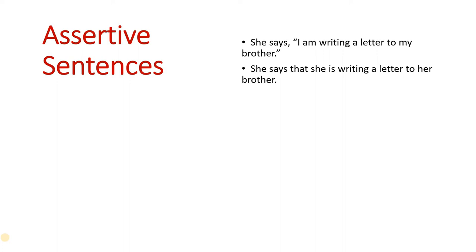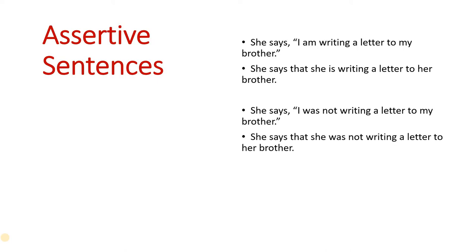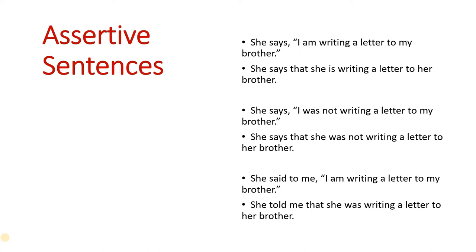See the statement and how the transformation has taken place. She says, 'I am writing a letter to my brother.' She says that she is writing a letter to her brother. Now this is an assertive sentence. You remember what is an assertive sentence — you see the change of tense or the change of pronouns. She says, 'I was not writing a letter to my brother.' She says that she was not writing a letter to her brother.